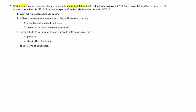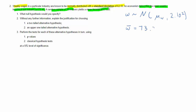Here is a hypothesis testing question. We have a weekly wages random variable W, normally distributed with a standard deviation of 2.1, so variance of 2.1 squared. The unknown is the mean of that random variable. Someone claims that the mean should be 72.40. We have a random sample of 35, and the mean income in that sample, w-bar, is 73.2, and n is 35.